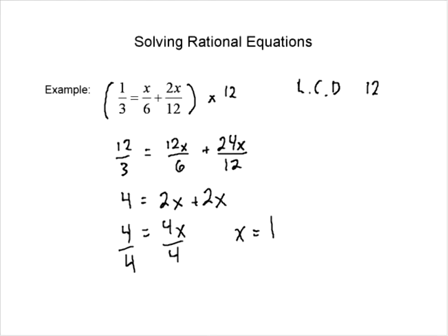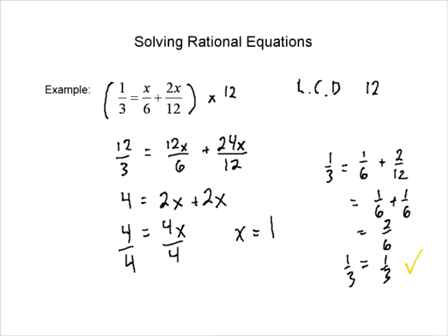Now we want to go back and verify the solution works in our original equation. If we substitute x=1, we have 1/3 equals 1/6 plus 2/12. Since 2/12 equals 1/6, the right side becomes 1/6 plus 1/6, which is 2/6, which is 1/3. And 1/3 does equal 1/3.